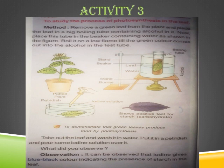One very important thing about photosynthesis: carbon dioxide is used for photosynthesis and oxygen is given out. Don't write the opposite, because in higher classes you will learn about respiration, where the opposite happens — oxygen is taken in and carbon dioxide is given out. Here in photosynthesis, carbon dioxide is taken in and oxygen is given out.